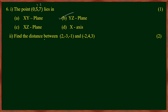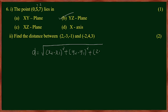Find the distance between the two points. We are using the root of (x2 minus x1) squared plus (y2 minus y1) squared plus (z2 minus z1) squared. We identify x1, y1, z1 and x2, y2, z2 from the given points.